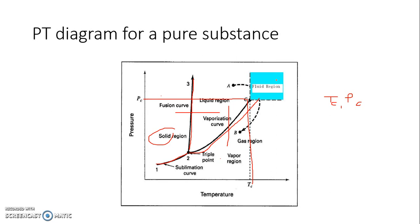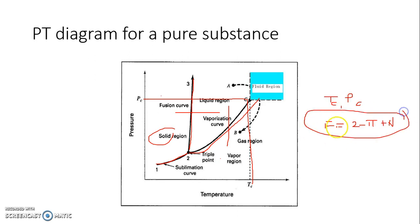As mentioned earlier, there is no mention of how volume changes in this PT diagram, which we will be able to see when we discuss the PV diagram. Another aspect we will look at for this diagram in the next video is the application of the Gibbs phase rule, which is F equals 2 minus pi plus N, or 2 minus P plus C. We will apply the Gibbs phase rule to understand various degrees of freedom and how this impacts our choice of independent variables. We will analyze the same diagram with the help of degrees of freedom when we meet in the next video.